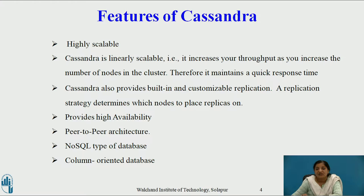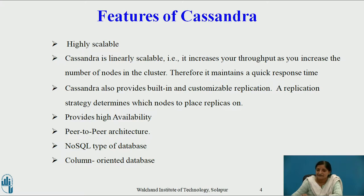Cassandra also provides a built-in and customizable replication strategy. A replication strategy determines which nodes to place replicas on. There are two types of strategies: simple strategy and network topology strategy. Simple strategy is used when the Cassandra cluster contains only one data center, where replicas are spread across one data center. Network topology strategy is used when the Cassandra cluster contains more than one data center, where replicas are spread across more than one data center. A replication factor can also be specified by the admin or owner of the database, deciding how many replicas have to be stored in a cluster.